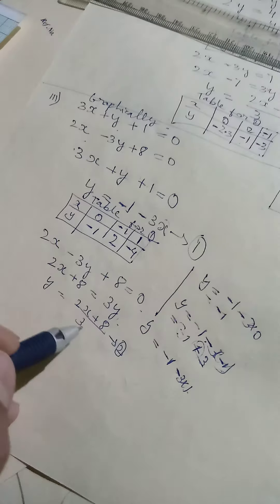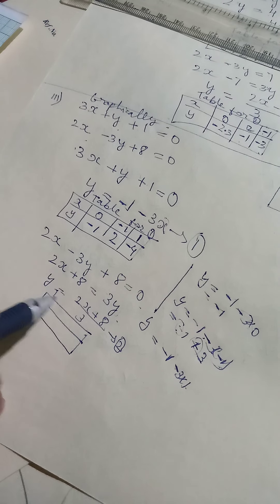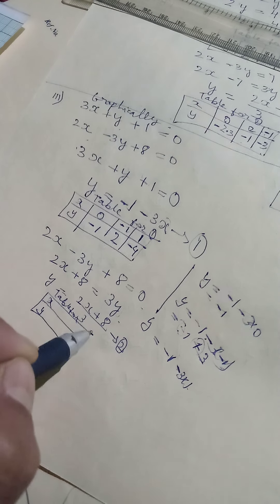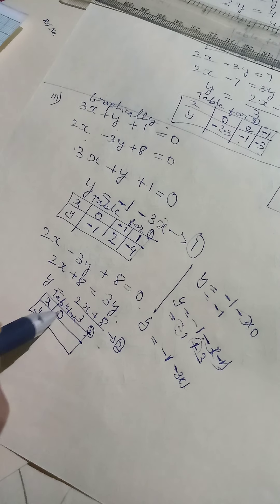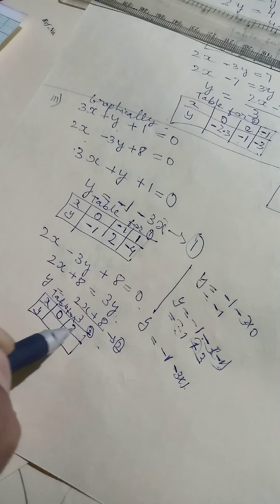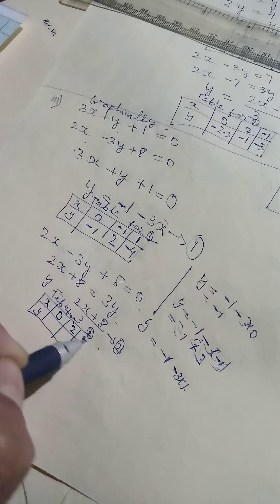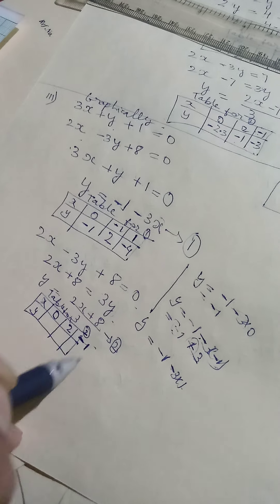So clearly you see, we bring X this side. Okay, so we can choose any 3 values for X and calculate for Y. You can choose any value. So we may choose 0, we may choose 2, we may choose minus 1. It's up to you, you can choose any.